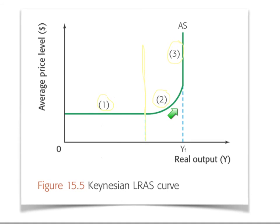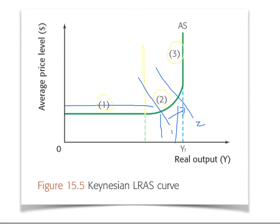Region two is the upward-sloping portion of the curve. If aggregate demand shifts outward here, there's a change not only in quantity but also in price. As the economy approaches its potential output YF and spare capacity is used up, the economy's available factors of production become increasingly scarce. As producers continue to try to increase output, they will have to bid for these increasingly scarce factors. Higher prices for factors of production mean higher costs for producers, and the price level rises to compensate — corresponding to the upward-sloping region two of the Keynesian model.